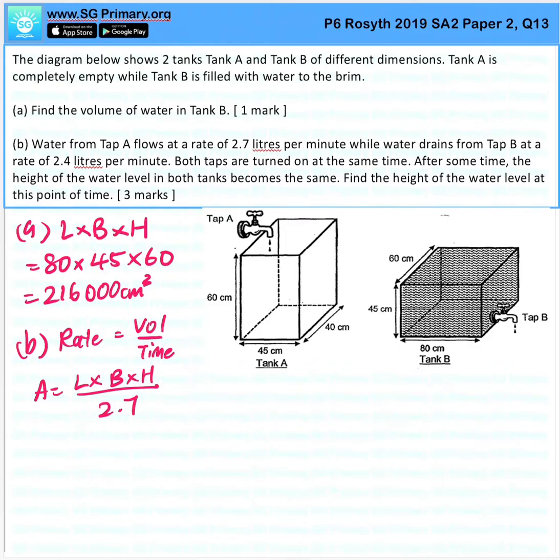We don't know the height, so the height will remain unknown. Length times breadth will be 1800 over 2.7. For B, length times breadth times height over rate—because it's time taken to drain B, the approach will be different. You take the full volume minus the length times breadth, which is 4800 times the height, over 2.4.